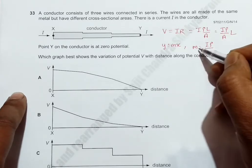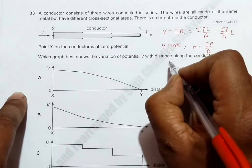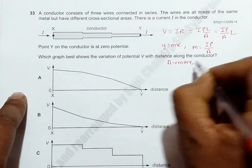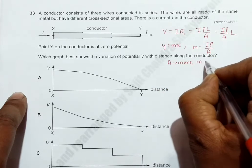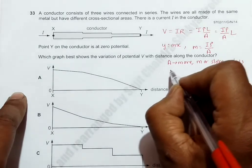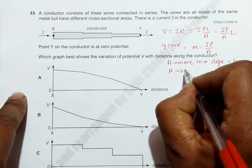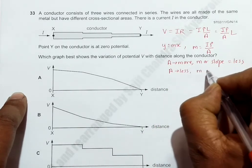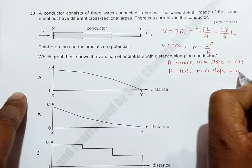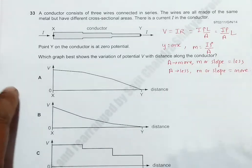So that means if A is more, our slope will be less. And if A is less, our slope will be more. So let's go through all the choices here.